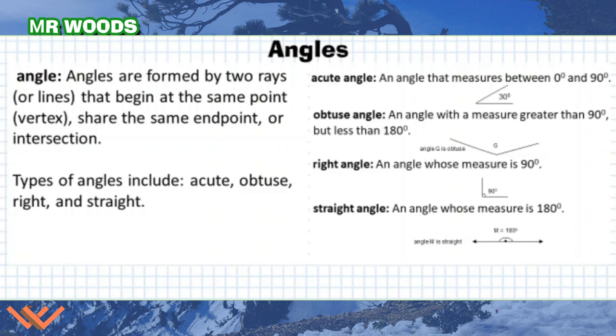Angles are formed by two rays or lines that begin at the same point, a vertex, and they share the same endpoint or intersection. So here we have an acute angle right here, and you see there's these two lines and they meet right here at an endpoint or a vertex. And this measurement is less than 90 and greater than zero. If it's just zero, it's just a flat line. But if we have it between zero degrees and 90 degrees, it's going to be an acute angle.